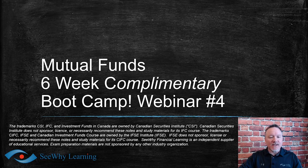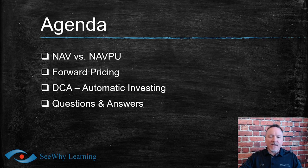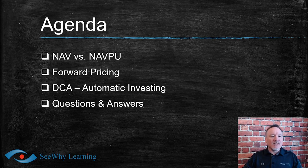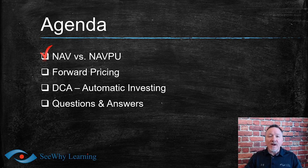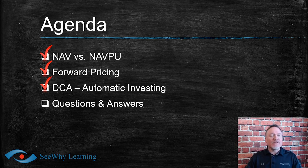Let's have a look at today's agenda. We have four items: we'll start with a discussion on NAV — net asset value — versus NAVPU, net asset value per unit or per share. Then we'll talk about forward pricing, followed by DCA — dollar cost averaging, also known as automatic investing. Finally, we'll take up some exam-level questions, and I've got a few more questions than usual today.